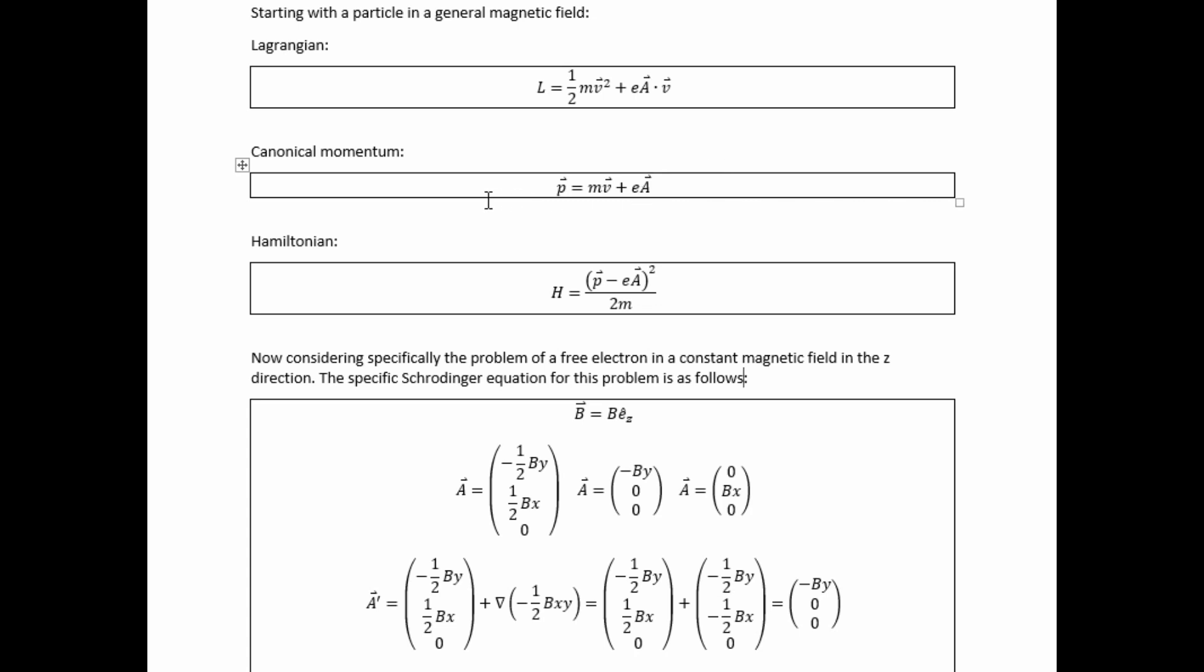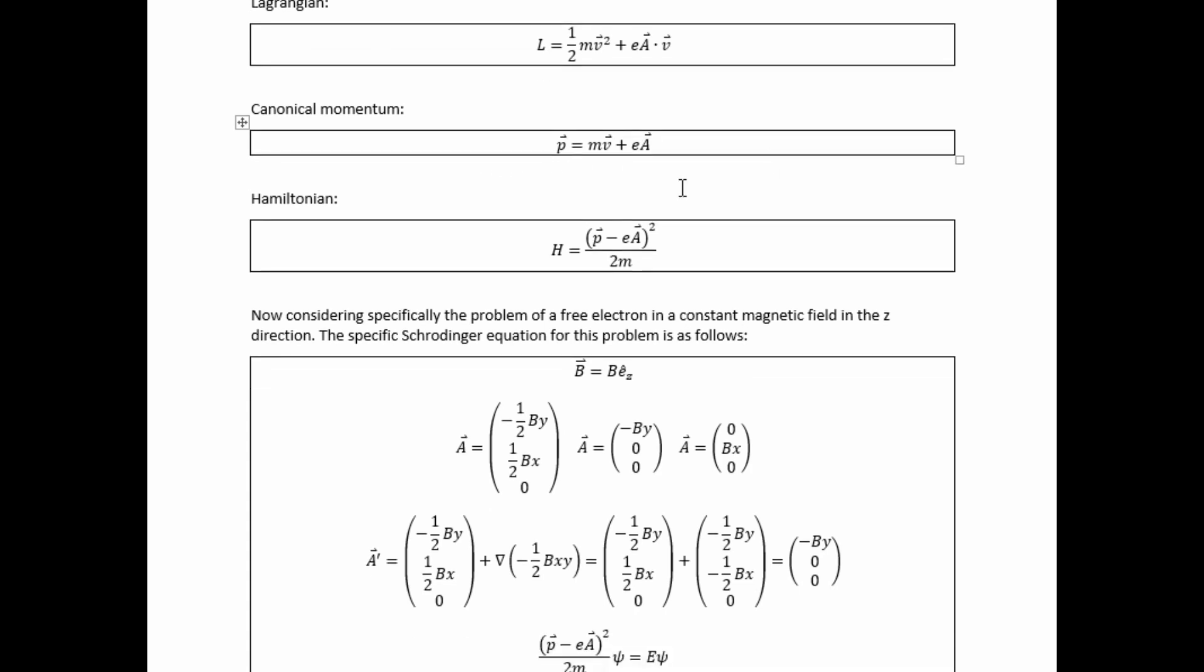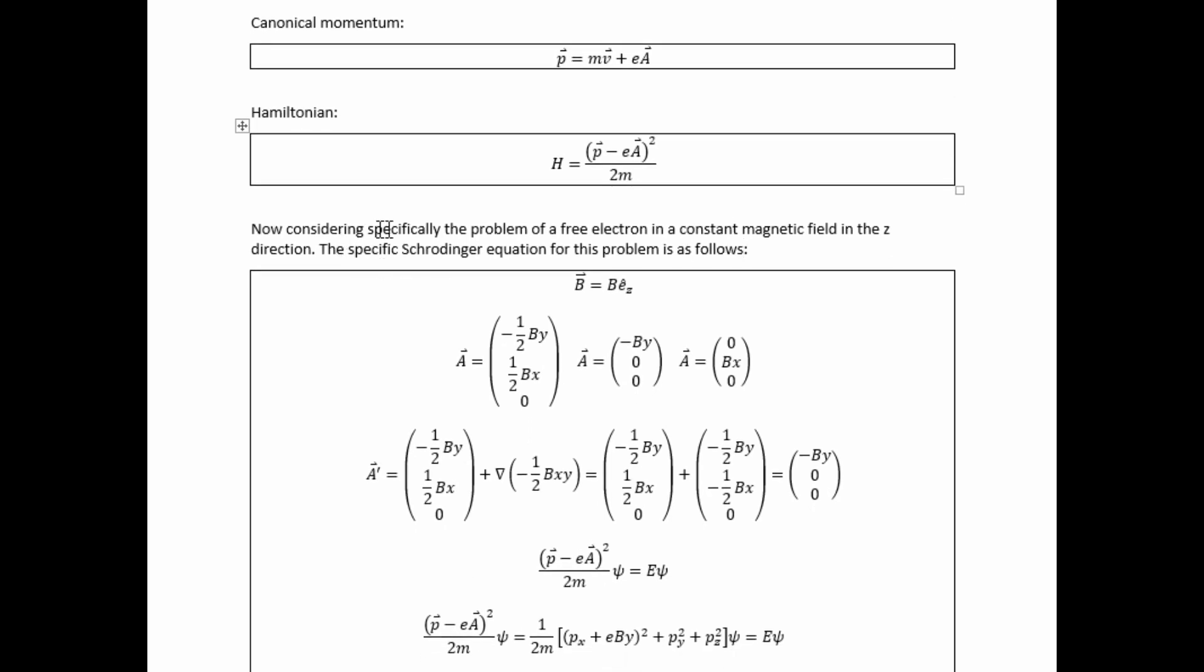We can calculate the canonical momentum. It turns out to be this. With the canonical momentum, we can then write down the Hamiltonian. Now considering specifically the problem of a free electron in a constant magnetic field in the z-direction, this consideration gives the specific Schrödinger equation for this problem.